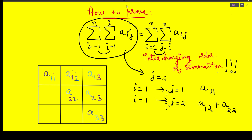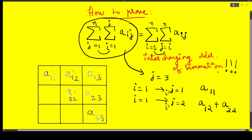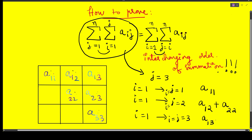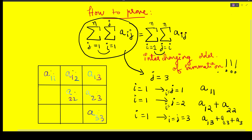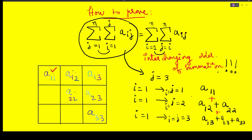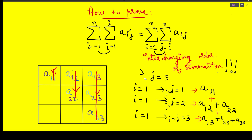The last case is when j = 3: i varies from 1 to j = 3, and j is fixed at 3, so we get a₁₃ + a₂₃ + a₃₃. At the end you sum all of them — that's the left-hand summation. So a₁₁ is the first element, then a₁₂ + a₂₂ sums the second column, and a₁₃ + a₂₃ + a₃₃ sums the third column. You're summing along the columns and adding them all together.